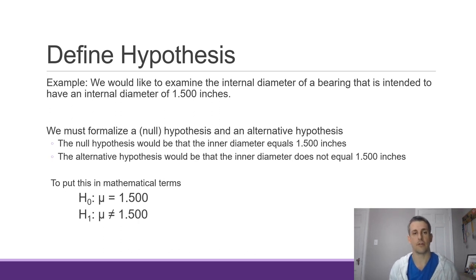Now we have to formalize this. Basically we're going to have two hypotheses. We're going to have one hypothesis that the bearing is exactly equal to 1.5, and another hypothesis that it does not equal 1.5. So we call the one that is equal to 1.5 the null hypothesis. And then we propose an alternative hypothesis that the internal diameter is not 1.5.